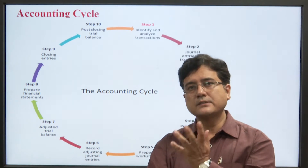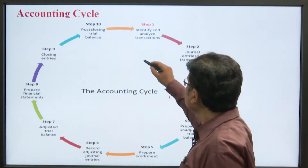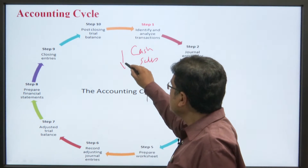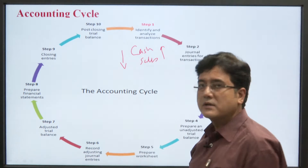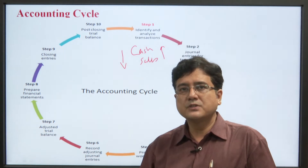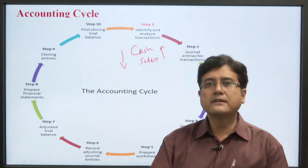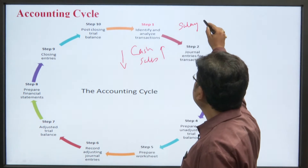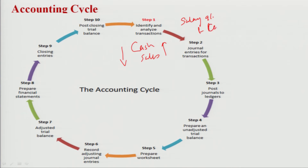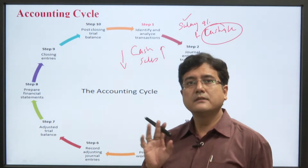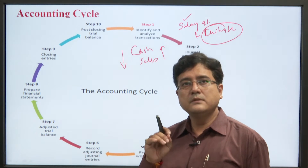For example, a cash sale transaction means cash comes into the company and goods go out — both are real in nature, so this is clearly a real account transaction. Similarly, for payment of salary, both salary account and cash account are involved. Salary account is nominal in nature and cash account is real in nature. Therefore, in the first step, we clearly identify and categorize the nature of the transaction.